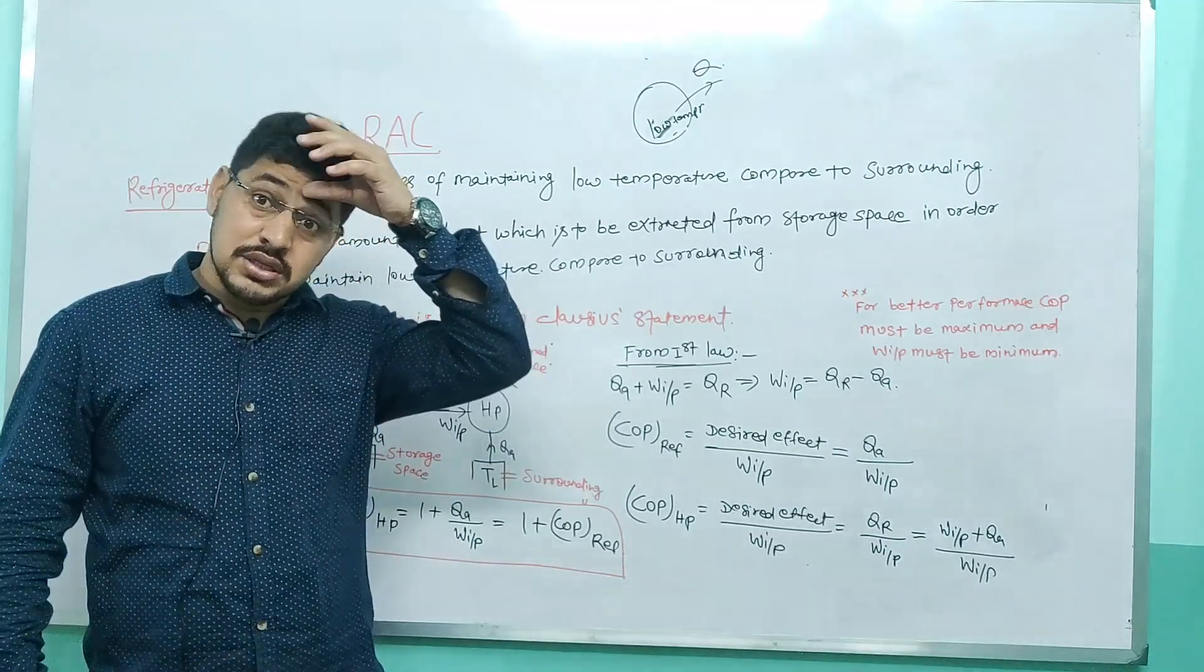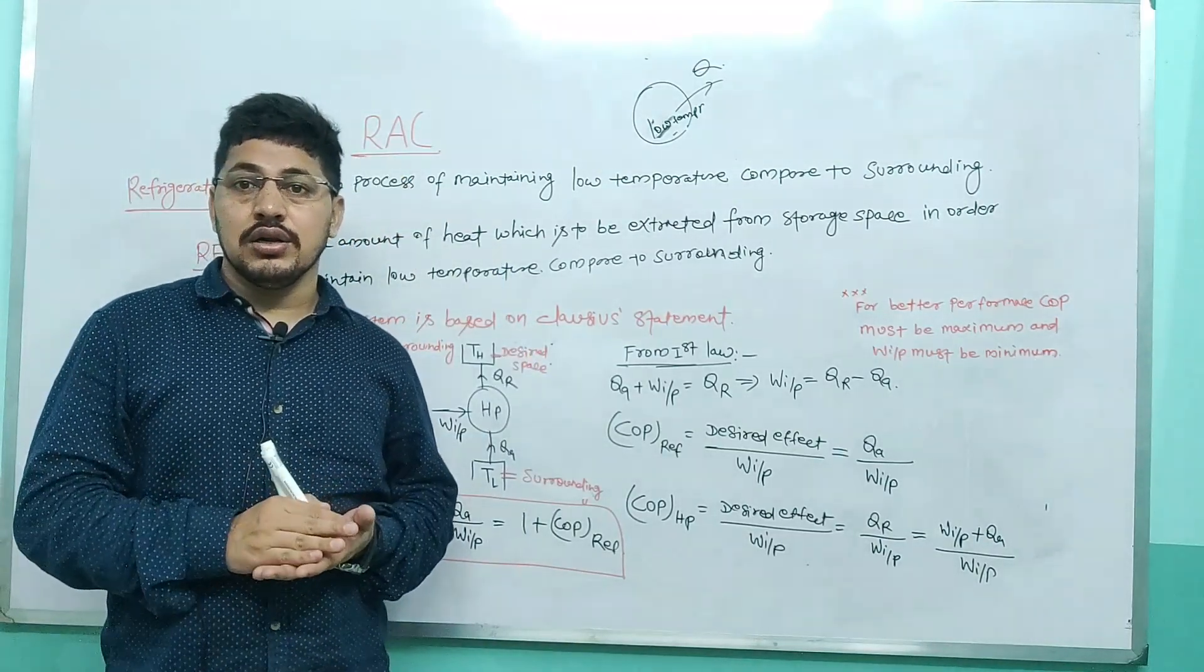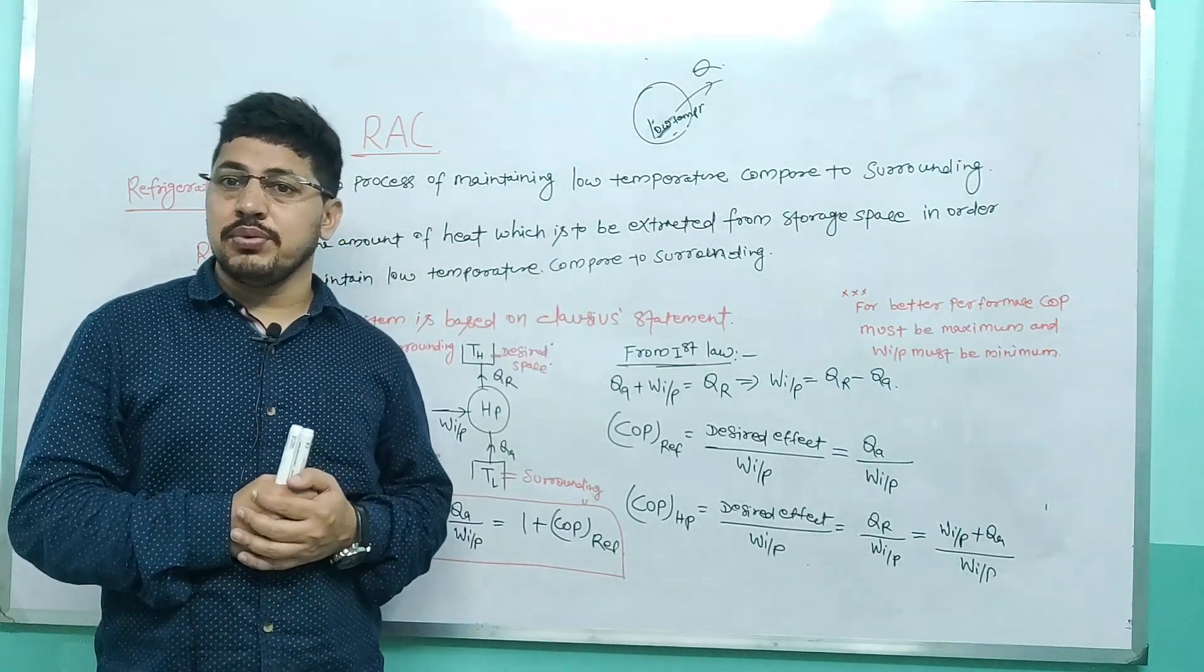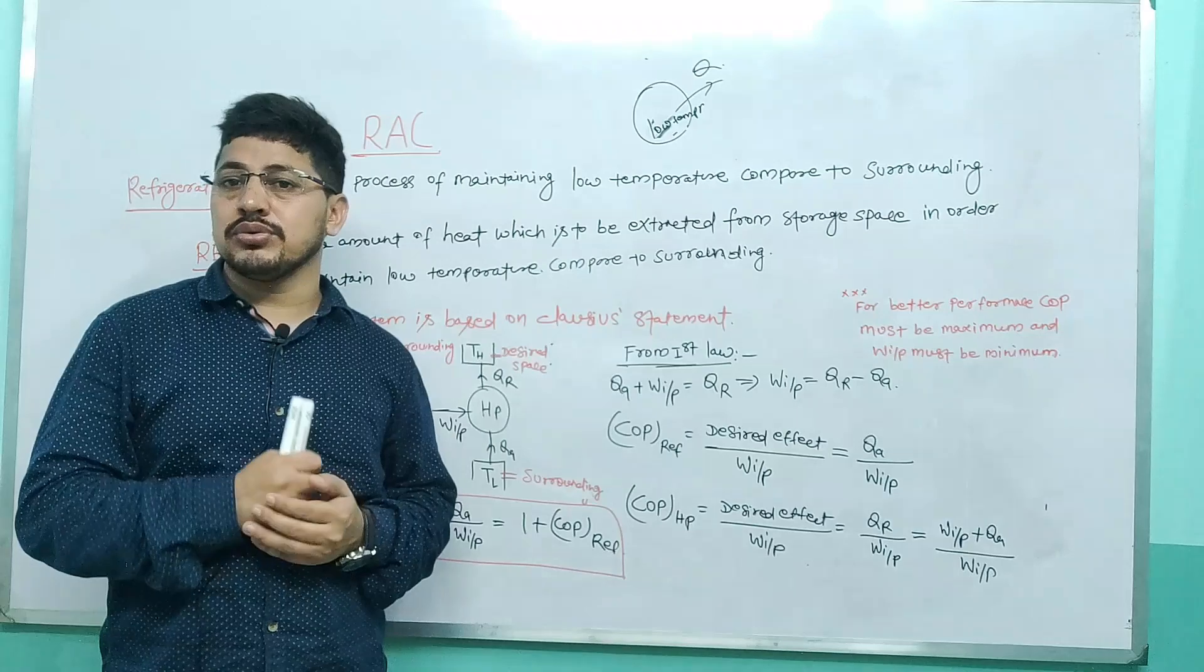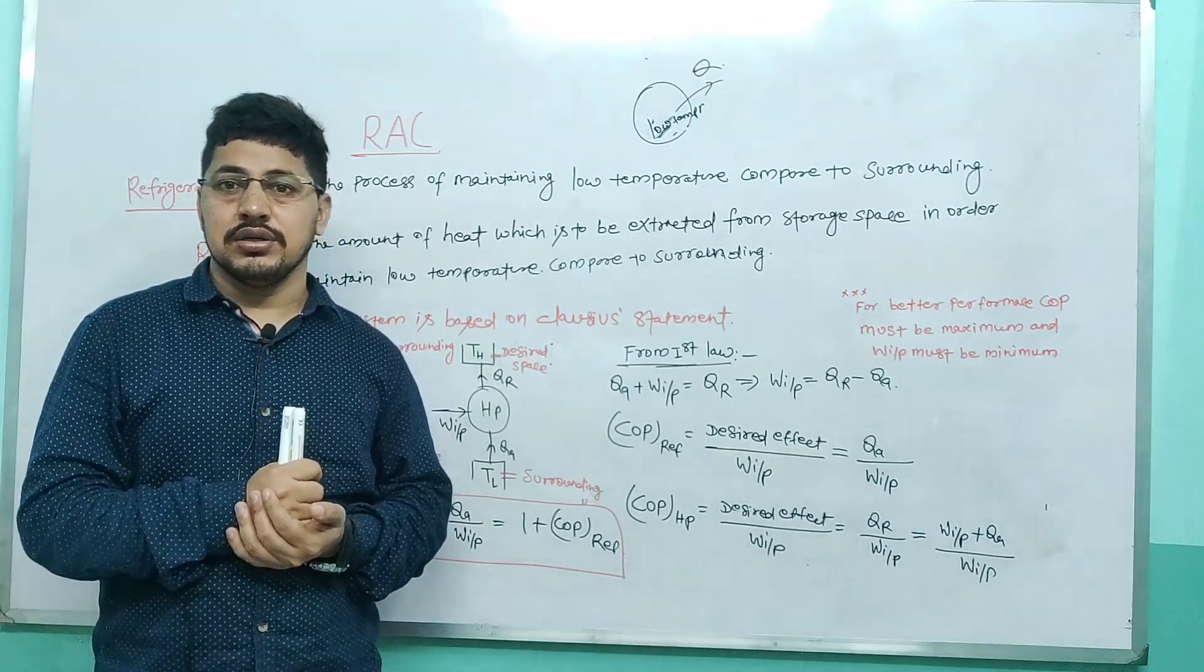Weightage of this subject in GATE examination is 4 to 5 marks. Topics covered in GATE through this subject are introduction to refrigeration, vapor compression refrigeration system, vapor absorption refrigeration system, reverse Brayton cycle, and air conditioning.